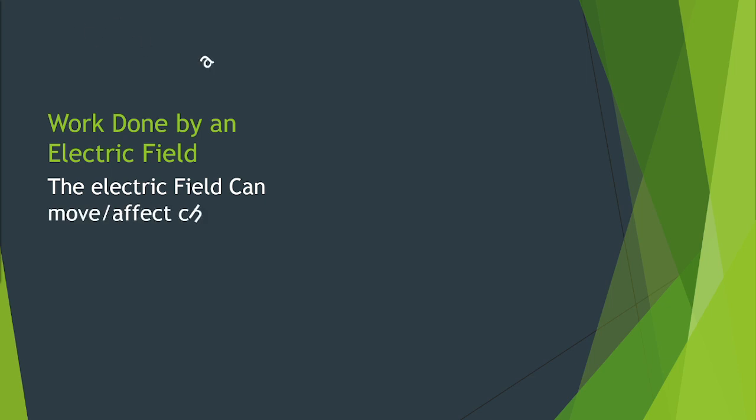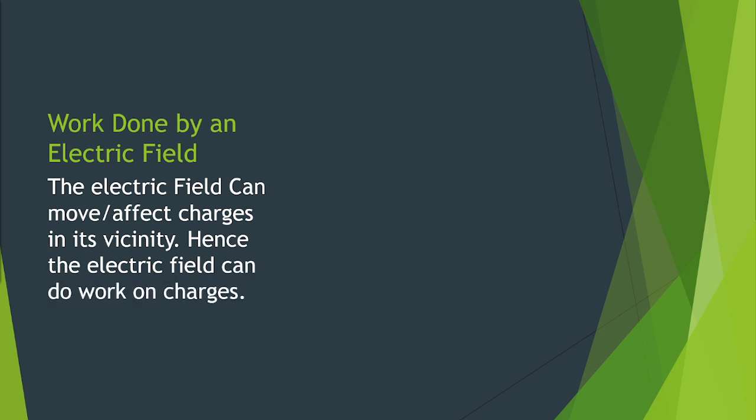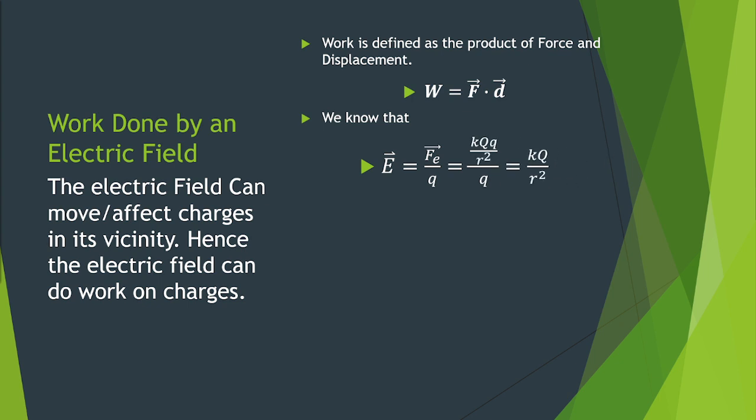Work done by an electric field. The electric field can move or affect charges in its vicinity. Hence the electric field can do work on charges. Work is defined as the product of force and displacement. We also know that the formula for the electric field E is F sub E over charge Q. We can simplify this and we will see that it is equal to K times Q over R squared.